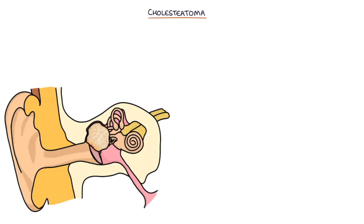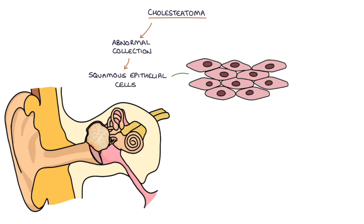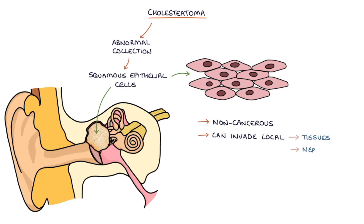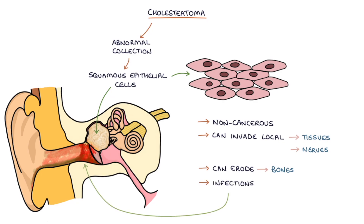A cholesteatoma is an abnormal collection of squamous epithelial cells in the middle ear. It's non-cancerous, but it can invade local tissues and nerves and it can erode the bones of the middle ear. It can also predispose to significant infections. Confusingly, cholesteatoma has nothing to do with cholesterol or a tumour.